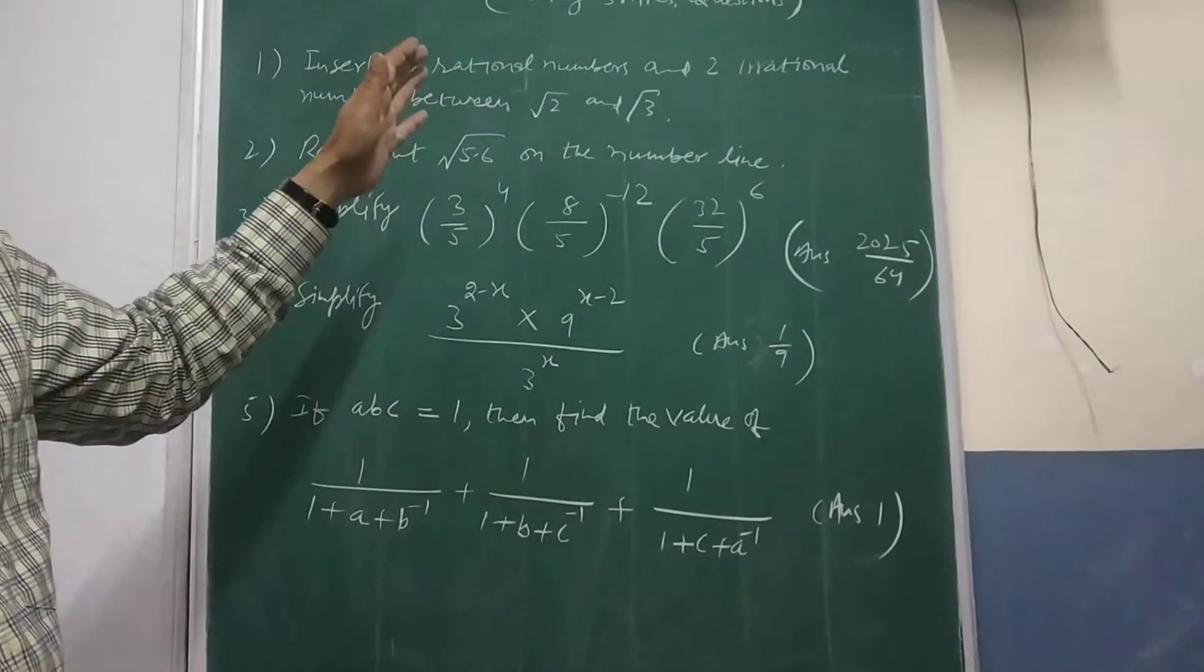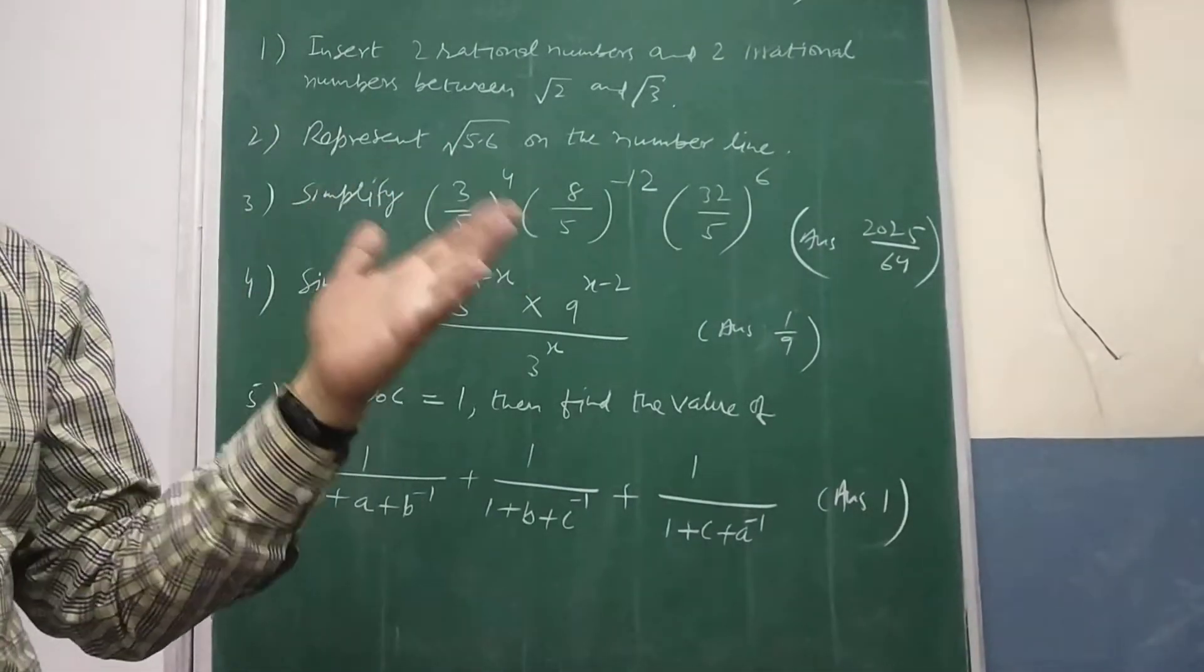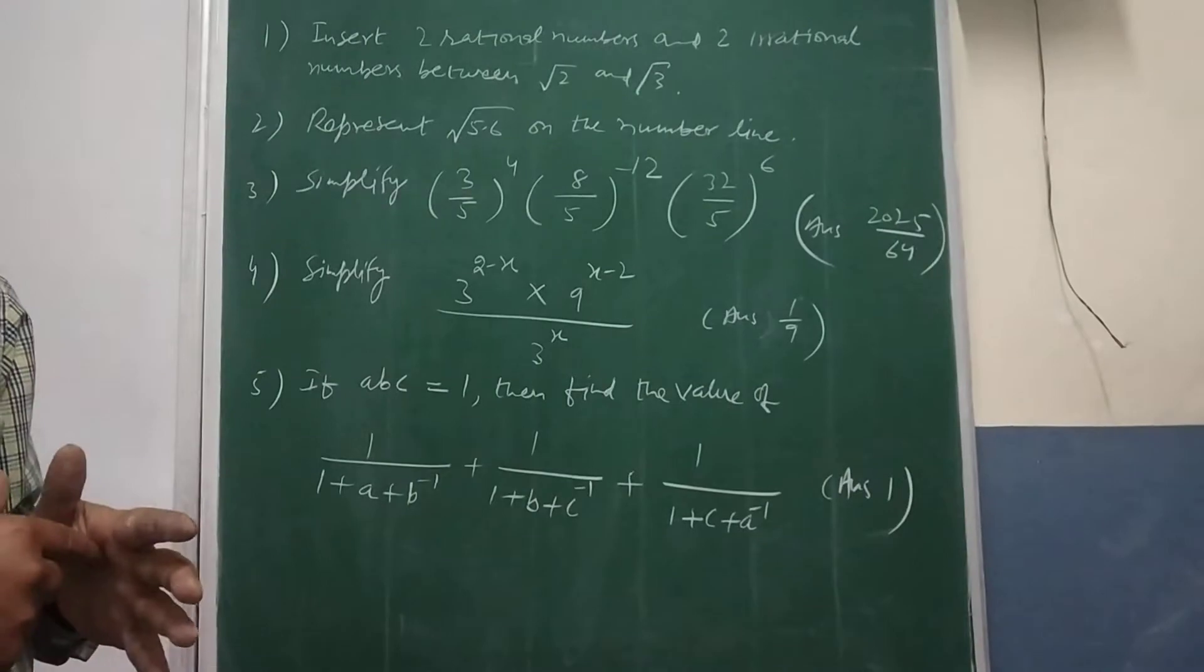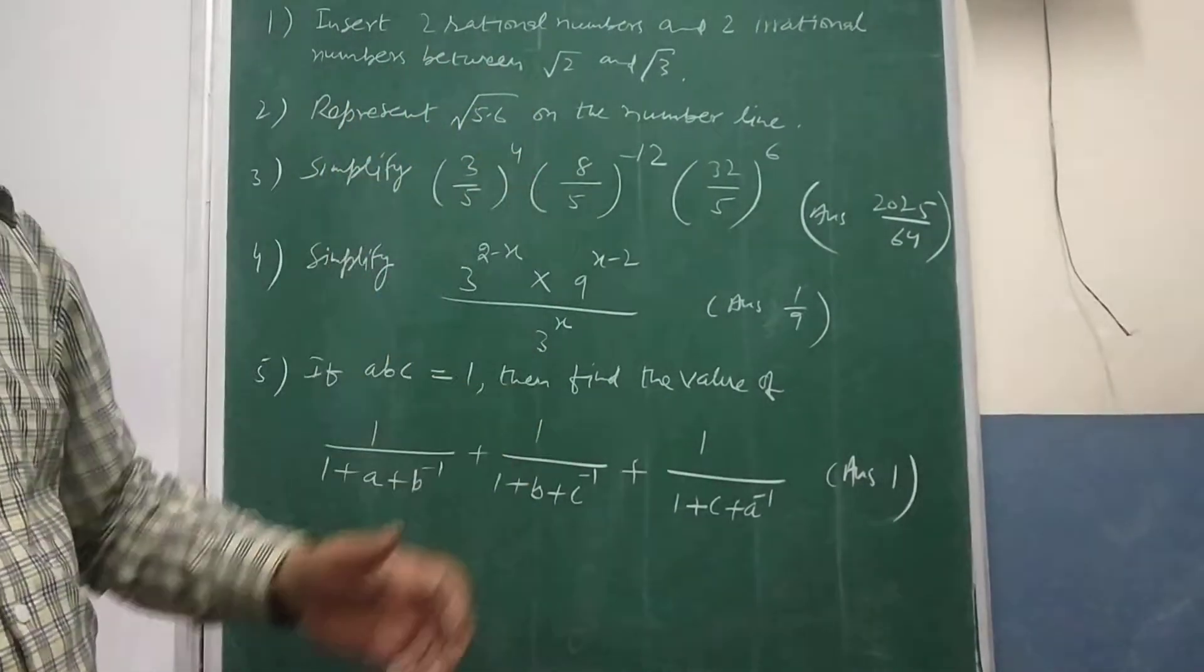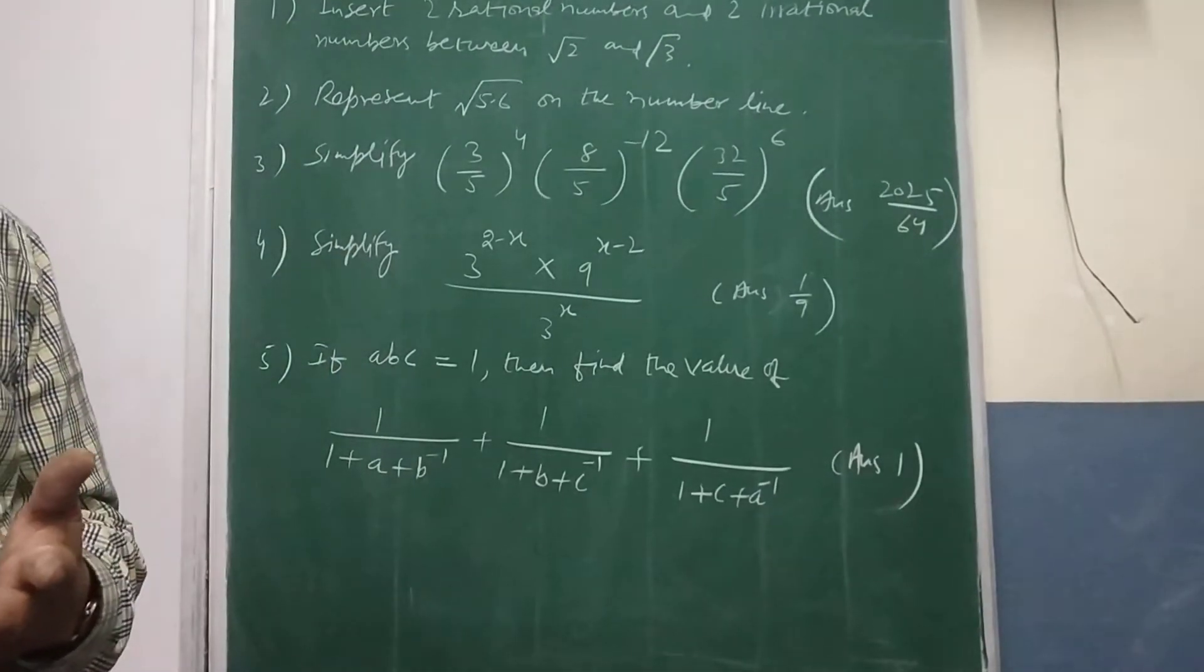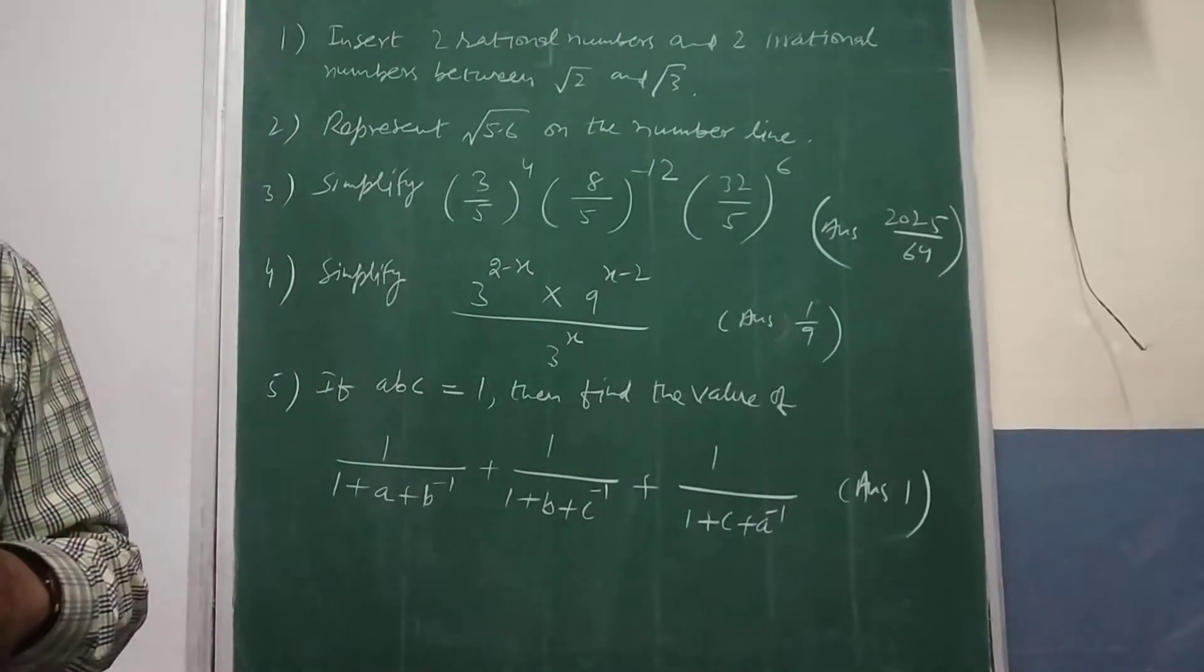In those numbers your rational is what? Either terminating you can mention any terminating number between those two or non-terminating but recurring that also you can pick. So feel free to mention any terminating. Feel free to mention the numbers and infinite possibilities are there and similarly irrational.